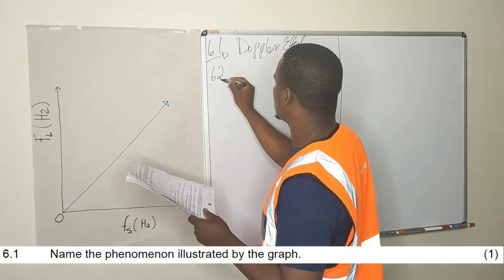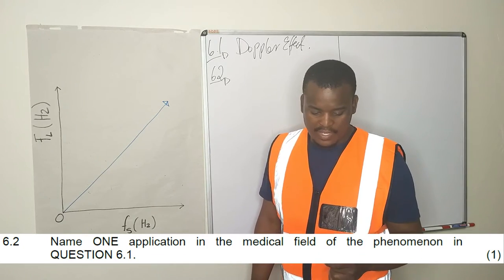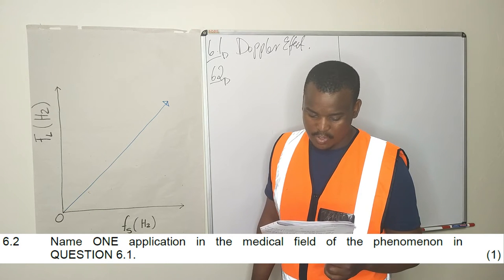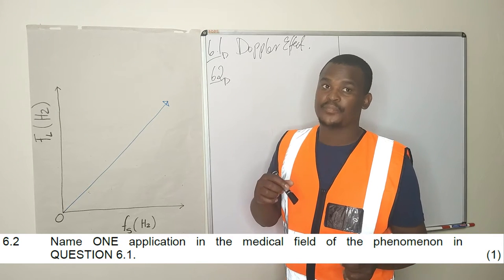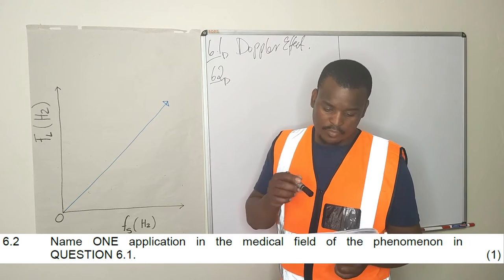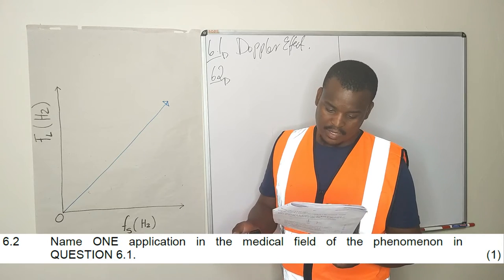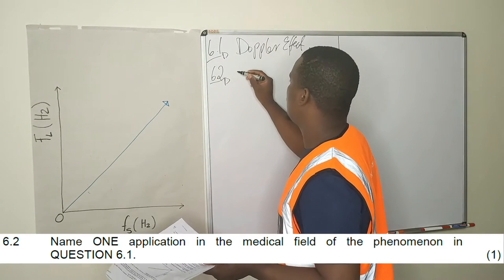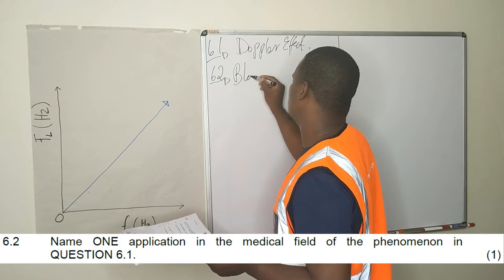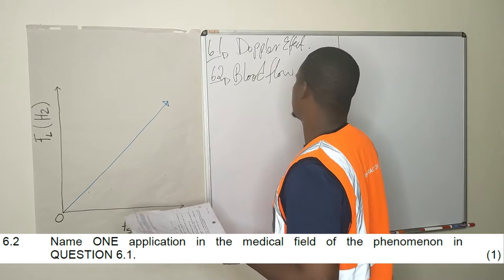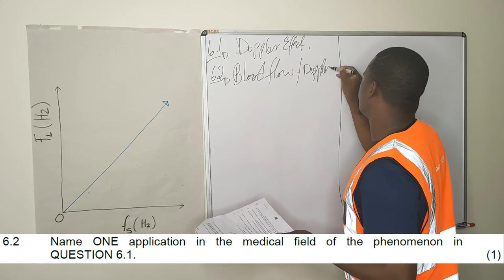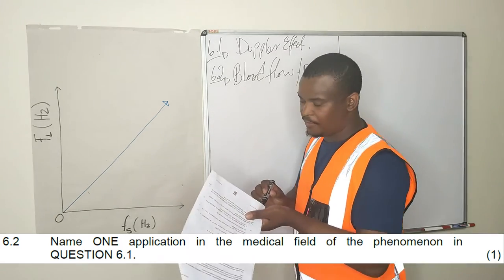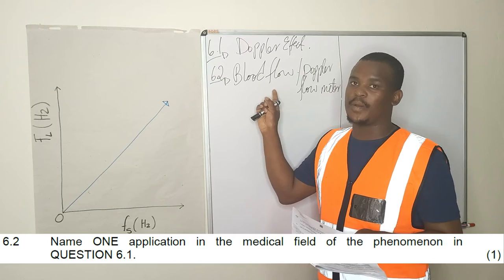6.2: Name one application in the medical field of the phenomenon in 6.1. One has to name the application of the Doppler effect in the medical field. The Doppler effect is used to measure blood flow.